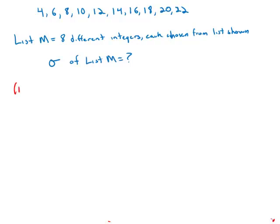Statement number one tells us the average of the numbers in list M is equal to the average of the numbers in the list shown. Well, the list shown, these are evenly spaced numbers. And so for evenly spaced numbers, we know that the mean always equals the median. And of course, what that would be is right in the middle here, the average of those two numbers, so that would be 13.